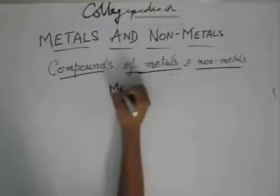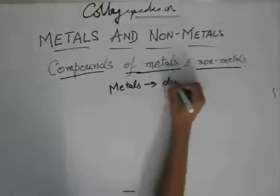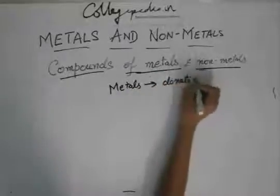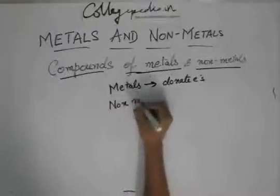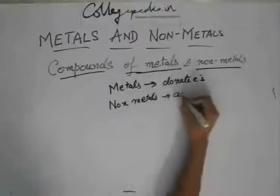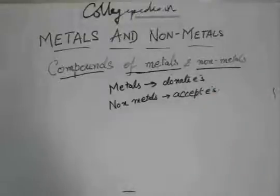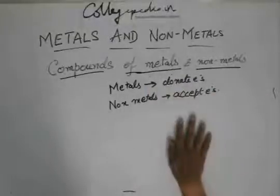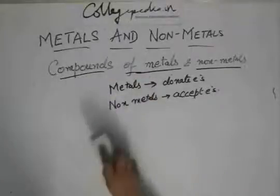Metals generally do not accept electrons, they donate electrons. And non-metals mostly accept electrons. So that's why metals donate these electrons to non-metals, so they form these compounds of metals and non-metals.